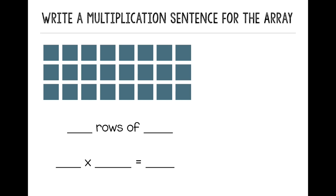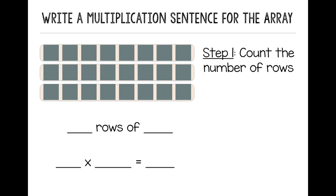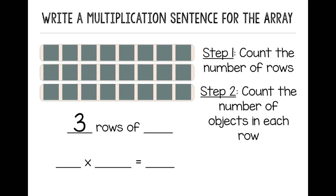So let's try writing a multiplication sentence for the array. Our first step is to count the number of rows. So I count 1, 2, 3. So we have 3 rows. Our next step is to count the number of objects in each row. 1, 2, 3, 4, 5, 6, 7, 8.